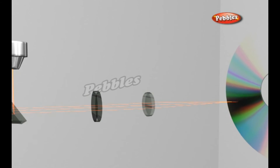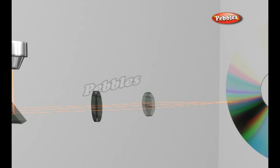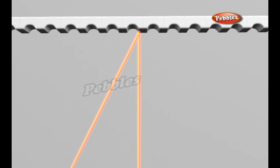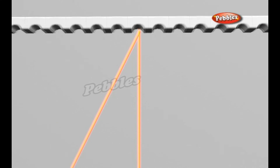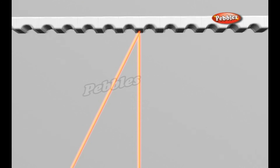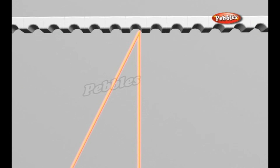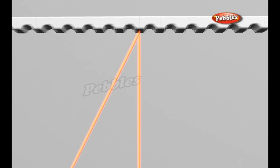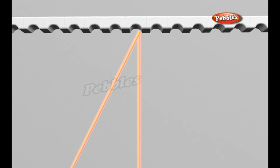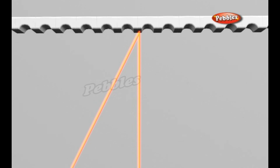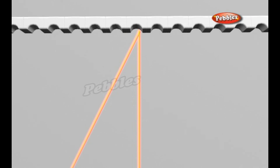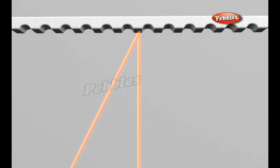The fundamental job of the CD player is to focus the laser on the track of bumps. The laser beam passes through the polycarbonate layer, reflects off the aluminium layer, and hits an optoelectronic device that detects changes in light. The bumps reflect light differently than the flat areas, and the optoelectronic sensor detects that change in reflectivity.